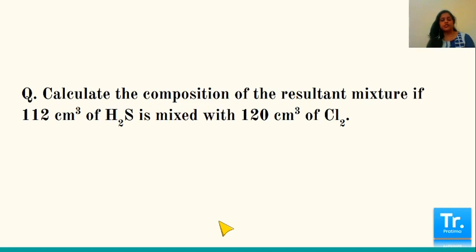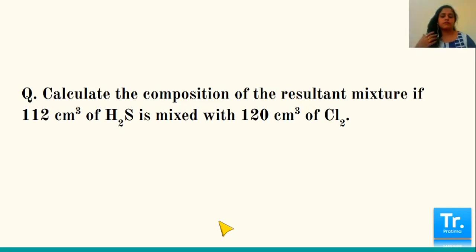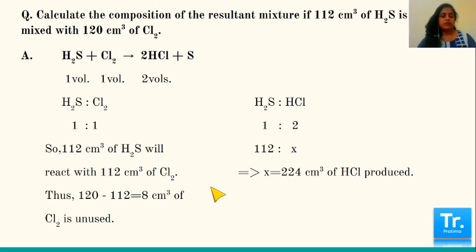Next question: H2S plus chlorine gives 2 HCl plus sulfur. Sulfur is solid, so we do not consider it. The ratio is 1:1:2. Given: 112 cm³ of H2S and 120 cm³ of chlorine. Since the ratio is 1:1, 112 cm³ of H2S reacts with 112 cm³ of chlorine. The amount of chlorine provided is 120 cm³, so 120 - 112 = 8 cm³ of chlorine is unused.